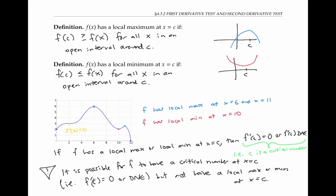Please pause the video for a moment and try to figure out what's different about the derivative of f in the vicinity of x equals two, where there's no local max or min, and in the vicinity of x equals six, 10, and 11, where there are local maxes and mins. Near the critical point at x equals two, the derivative is positive on the left and positive again on the right. But near the local maximums, the derivative is positive on the left and negative on the right. And near the local minimum, the derivative is negative on the left and positive on the right.